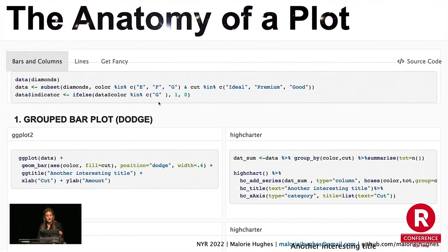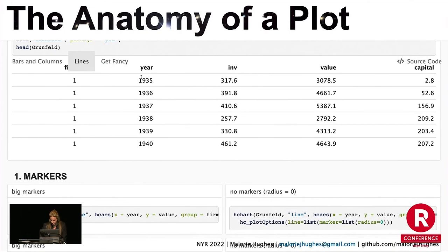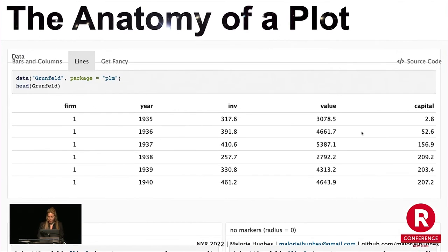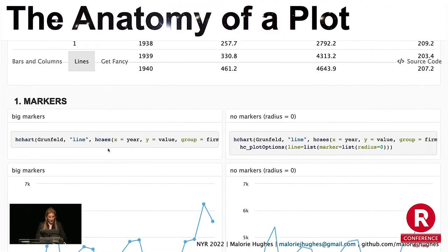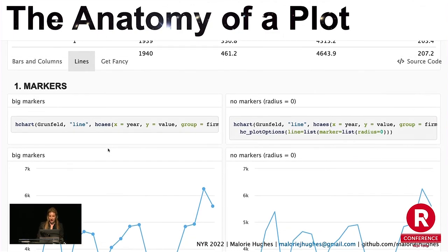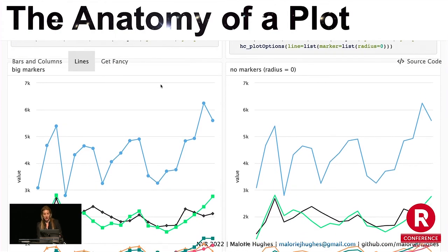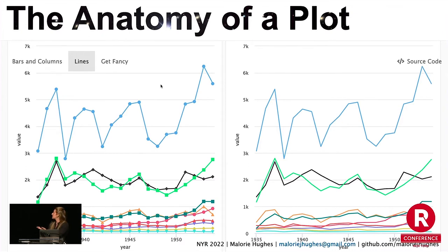Now let's see some other examples with some lines. We're looking at the Grunfeld investment firm value data — I needed some panel data. 200 observations, I think 10 different firms spanning over some period of time. That's available in the PLM package. First, markers — this one comes up a lot. The markers that you get automatically with a line plot are massive. I find them ugly. So as an extreme, I made them go away.